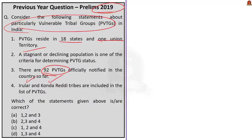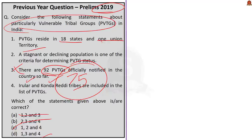This question is a perfect example to demonstrate the elimination technique. Take the third statement — there are 92 PVTGs officially notified. Anyone who has studied basic PVTG information will know India officially has only 75 PVTGs, not 92. So this statement is incorrect. Eliminating the third statement removes options A, B, and D, leaving the correct answer as C: 1, 2 and 4.